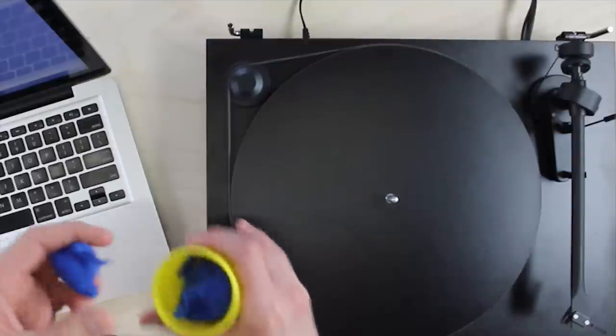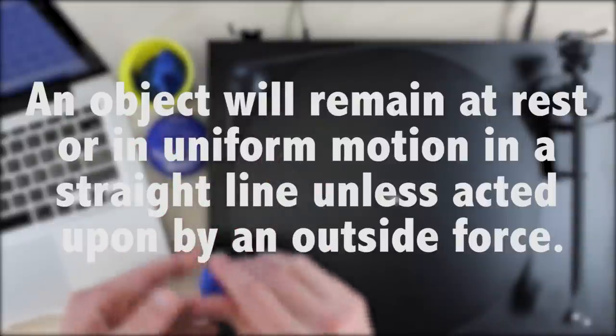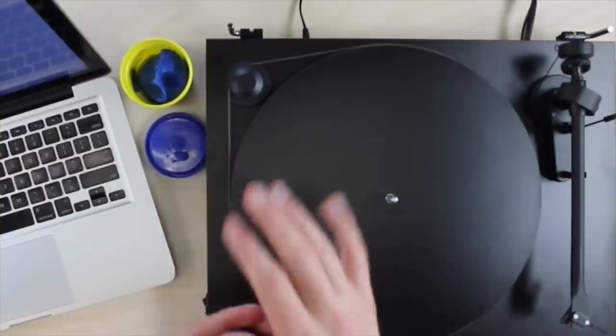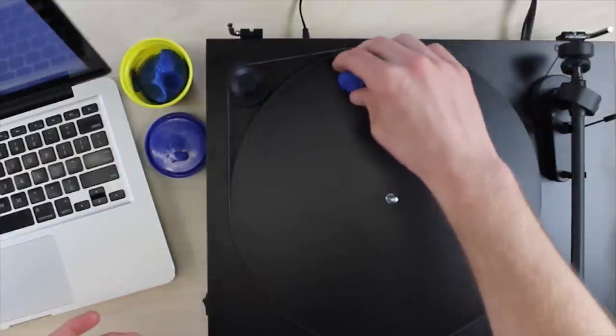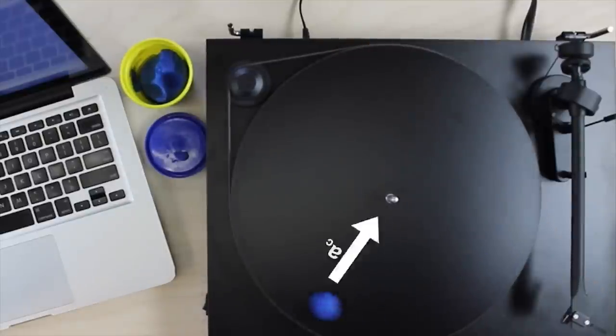Circles seem like very natural shapes to us, but if we consider Newton's first law, which says that objects really prefer to move in straight lines, then circles are kind of a weird way to move. In fact, keeping an object moving in a circular path requires the object to be constantly accelerated towards the center of the circle.